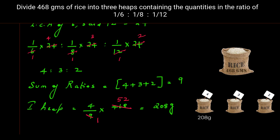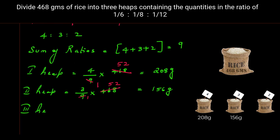The first heap is 208 grams. For the second heap, take ratio 3 divided by 9, multiplied by 468. Again 468 ÷ 9 = 52, so 52 × 3 = 156 grams. For the third heap, take ratio 2 divided by 9, multiplied by 468. That gives 52 × 2 = 104 grams.